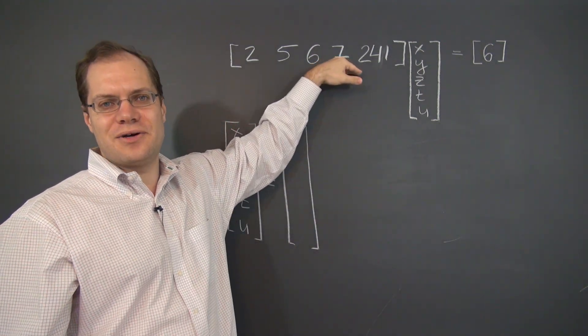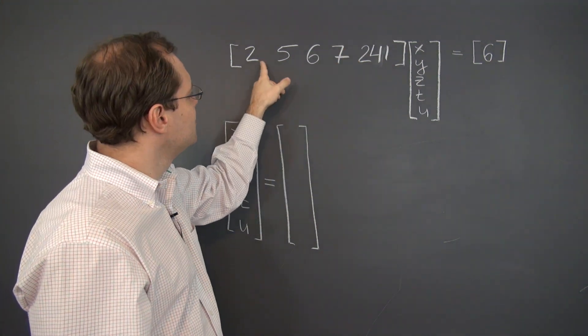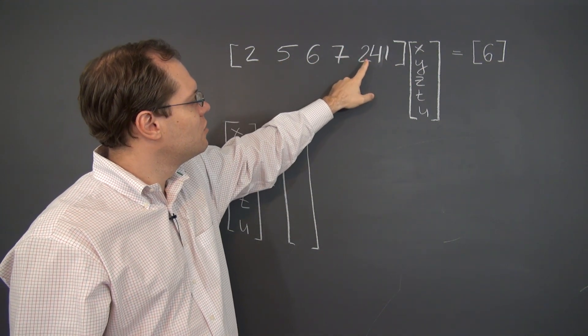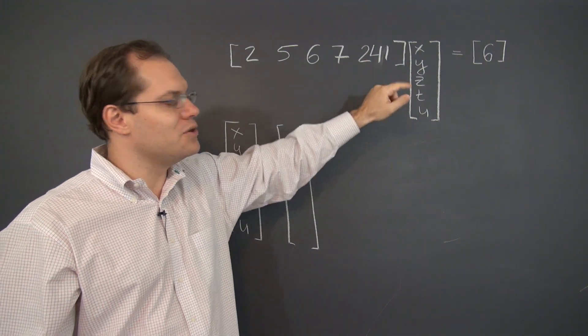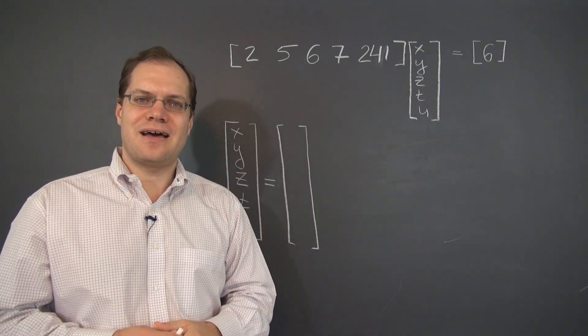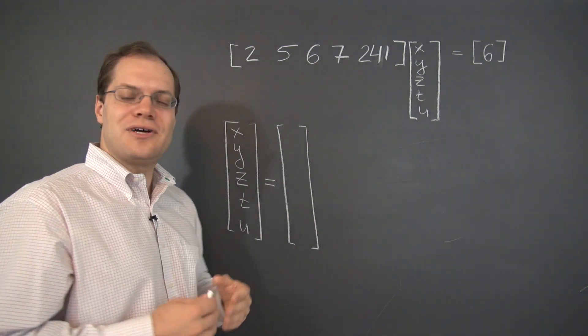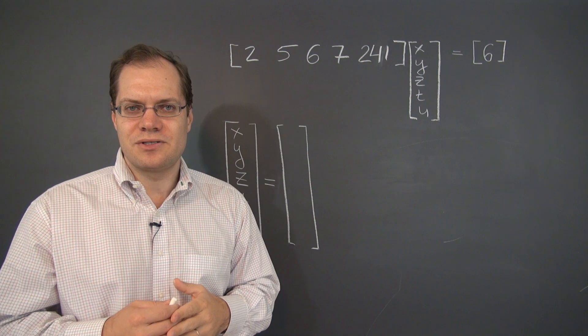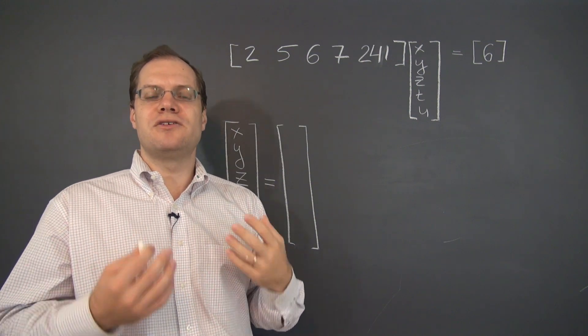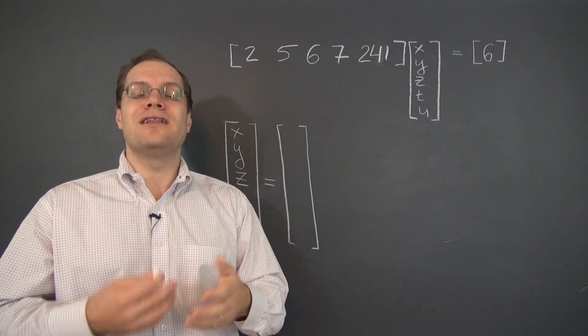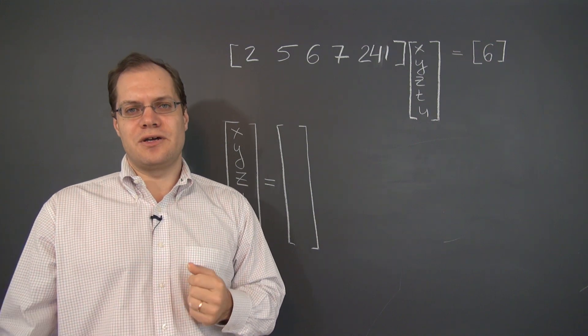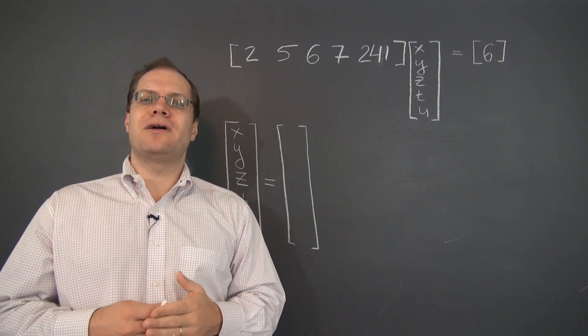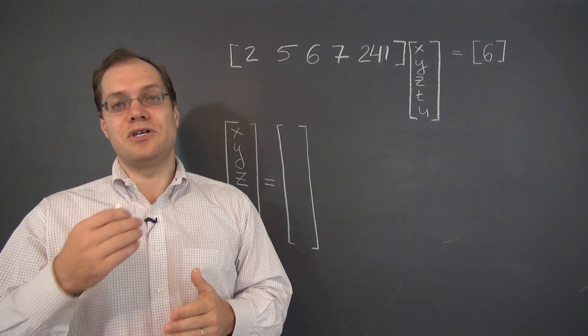and only a single equation. That equation reads 2x plus 5y plus 6z plus 7t plus 241u equals 6. Now this equation is downright silly, but I think it's very helpful to look at these quote unquote crooked systems because they really expose the structure and the relevant counts of what's going on. So we'll count the dimensions, which is very important, and will become even more important as we go on.